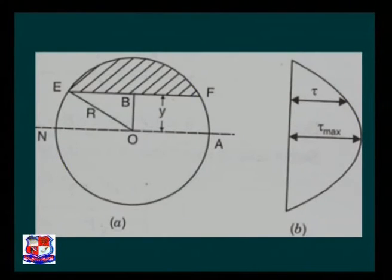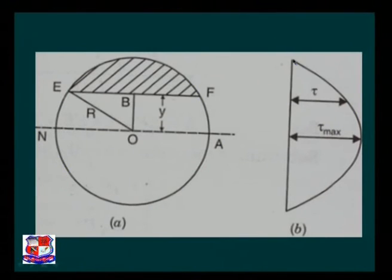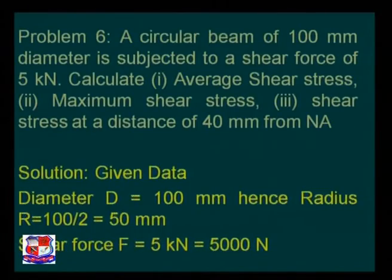The figure clearly shows the variation of shear stress across the circular section. At the neutral axis the shear stress is maximum (τ_max). As we proceed from the neutral axis to the outermost fiber — from y = 0 to y = r — the value of τ reduces to zero. This variation is parabolic in nature. We will now proceed further with the solution of one or two simple problems.